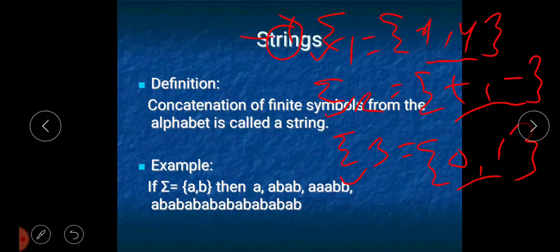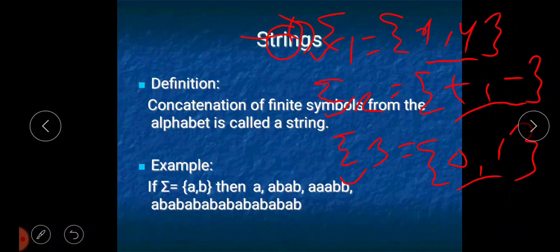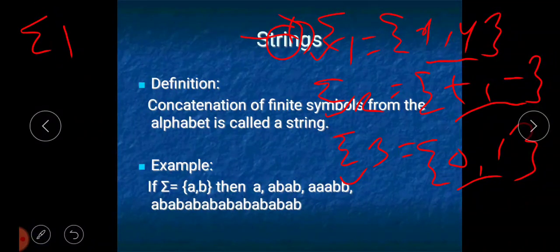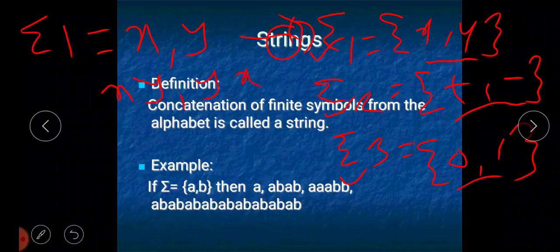Now let us discuss some examples of strings that we can define on alpha1. A string is usually denoted by s. So what can be an example of a string on alphabet1? x can be a valid string, y can be a valid string, xy can also be a valid string, and yx can also be a valid string.